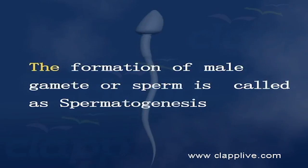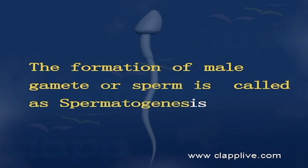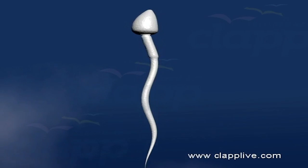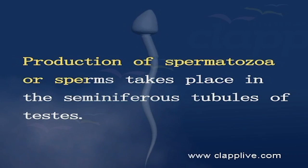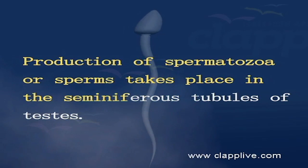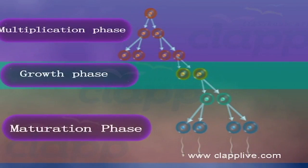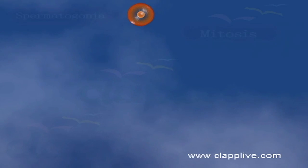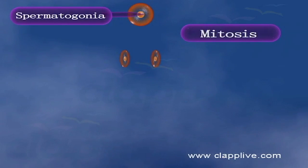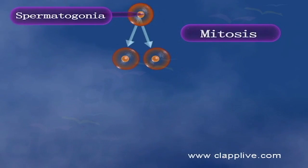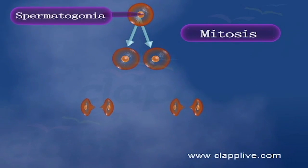The formation of male gametes or sperms is called spermatogenesis. It is initiated in the testes with the beginning of puberty. Production of spermatozoa takes place in the seminiferous tubules of the testes. Spermatogenesis completes in three phases. The process begins with the multiplication of spermatogonia, and each spermatogonium divides into two diploid primary spermatocytes.